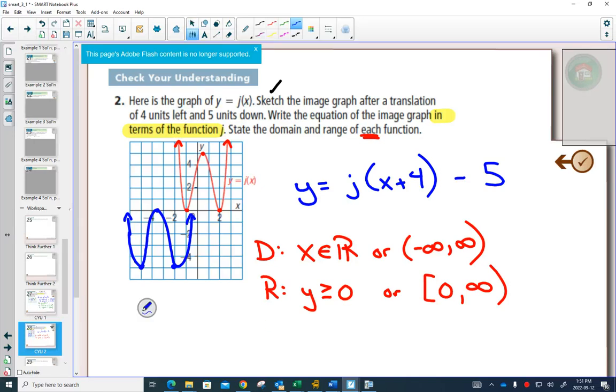So for the blue graph, its domain and range, does it have smallest x value? No, it still has a domain of everything. Its range, though, now the smallest y value is at negative 5. So I've written the equation. I've stated the domain and range of each function.